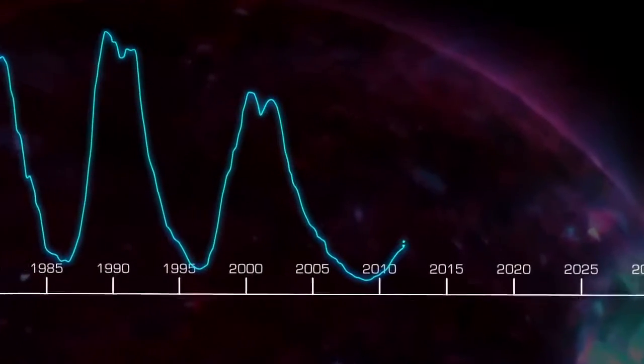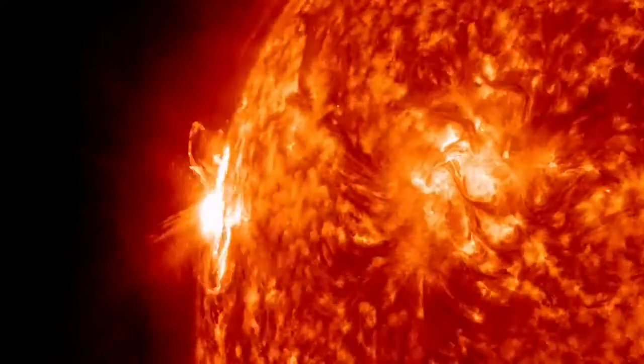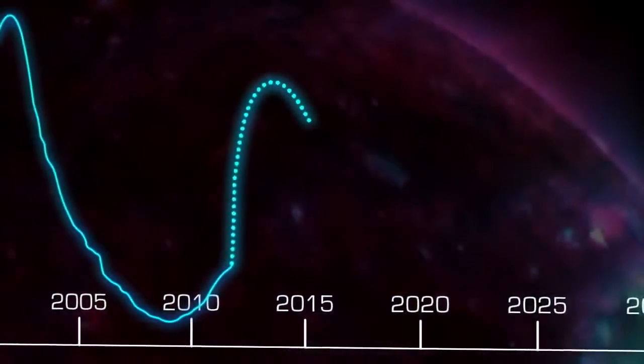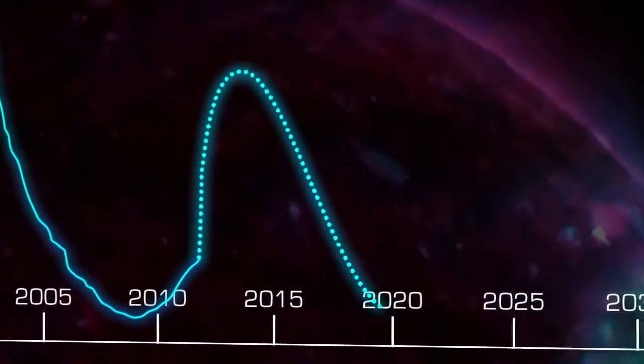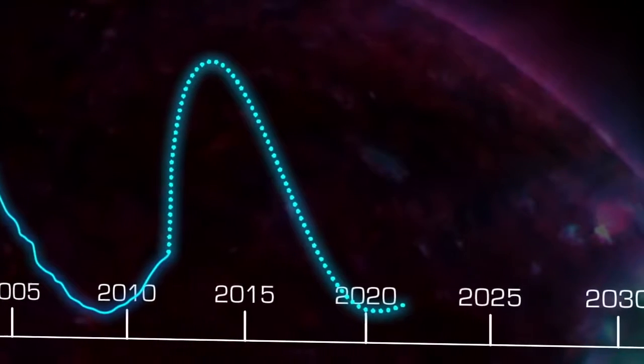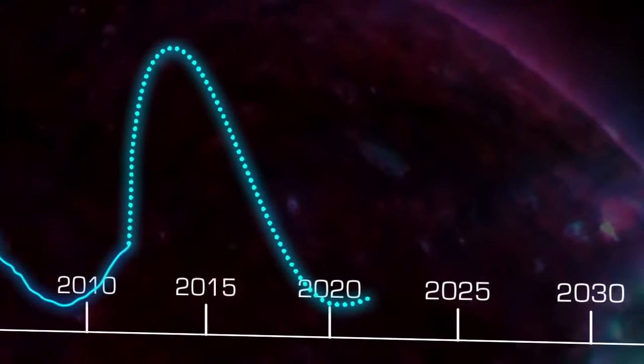Right now, the Sun is approaching solar maximum, so flares and CMEs are more common than they were a few years ago. This cycle may peak in 2013 or early 2014, and should reach its minimum around 2020, although predictions about the Sun are still uncertain.